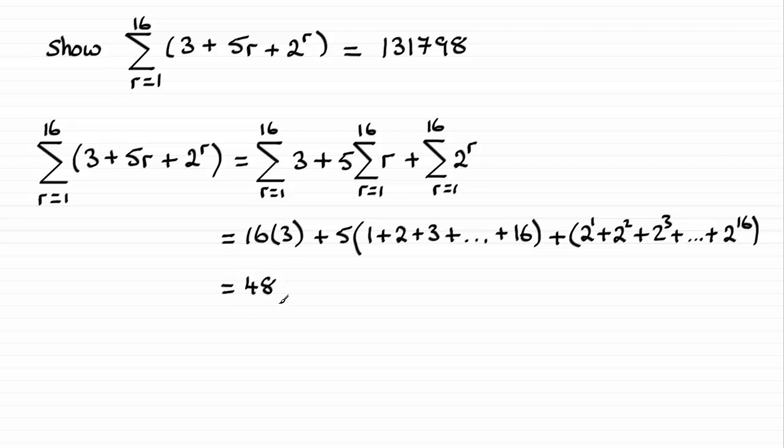Now here we've got 5 times the sum of all of these terms in the bracket. 1 plus 2 plus 3, etc., all the way up to 16. Now what I notice here, this is an arithmetic progression, or an arithmetic series actually, because we're adding terms where we've got a common difference of 1. We add 1 to each term. First term is 1, and the number of terms is 16.